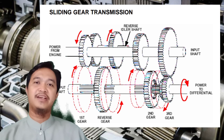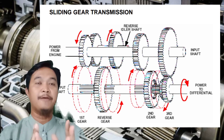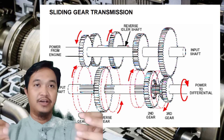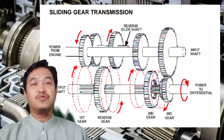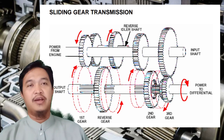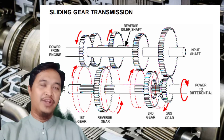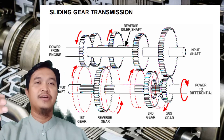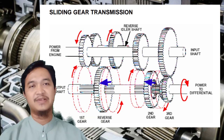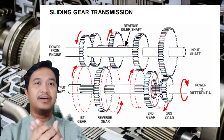Yang pertama, sliding gear — cara kerjanya adalah dengan pergeseran gear. Disini ada dua shaft, yaitu input shaft dan output shaft. Bagaimana dia memindahkan torque flow atau tenaga dari input engine ke output? Maka dia dengan cara menggeser gear-gear yang terpasang di masing-masing shaft tersebut.